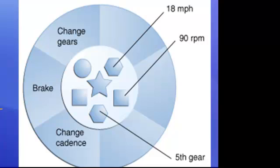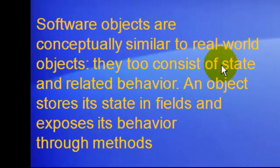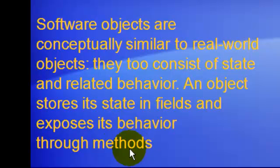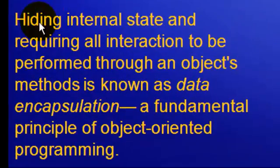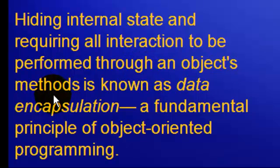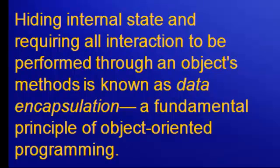Software objects are conceptually similar to real-world objects. They too consist of state and related behavior. An object stores its state in fields and exposes its behavior through methods. Methods operate on an object's internal state and serve as the primary mechanism for object-to-object communication. Hiding internal state and requiring all interaction to be performed through an object's methods is known as data encapsulation — the fundamental principle of object-oriented programming.